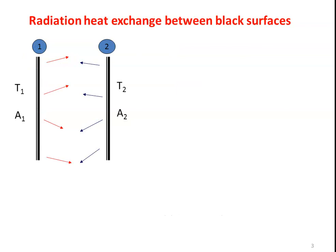First, we take up the radiation heat transfer between black surfaces. We assume two surfaces. The significance of black surfaces: they emit maximum radiation and absorb all the incident radiation. These are the two features of the black surface — it emits maximum radiation with emissivity equal to 1, and it absorbs all the radiation.